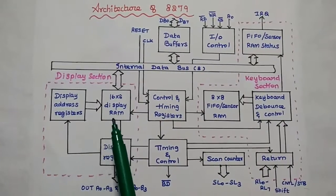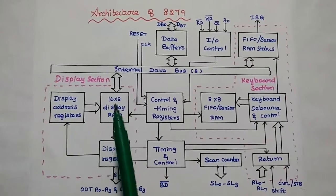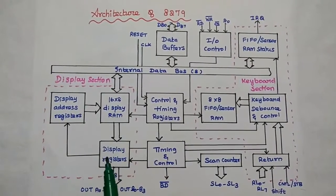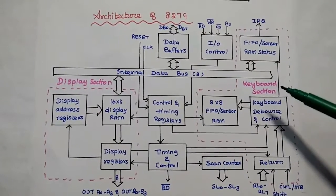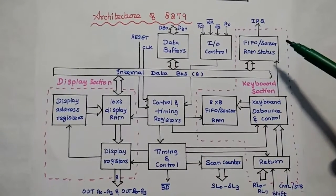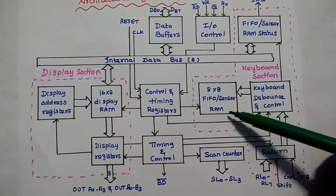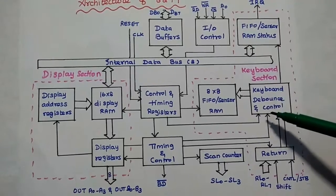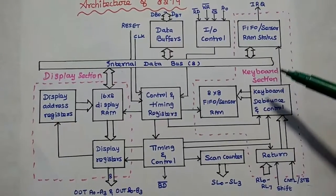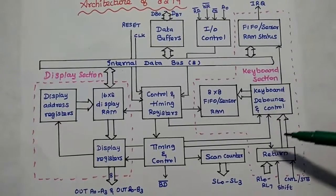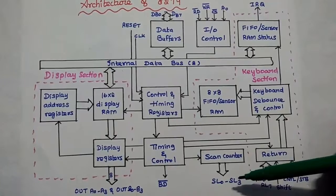The next one is the display section, which consists of display address registers, 16x8 display RAM, and display registers. Then the keyboard section — it has FIFO or sensor RAM status, 8x8 FIFO or sensor RAM, keyboard debounce and control, and the return buffer. The keyboard section has all 4 of these units. Then there is the scan counter, which has 4 scan lines used to scan the lines.